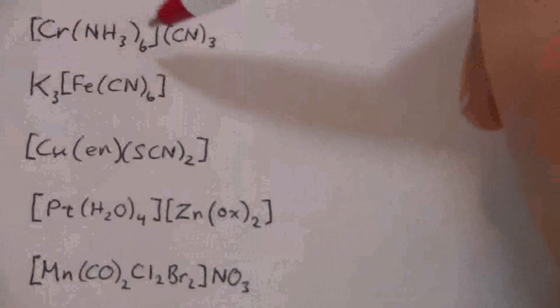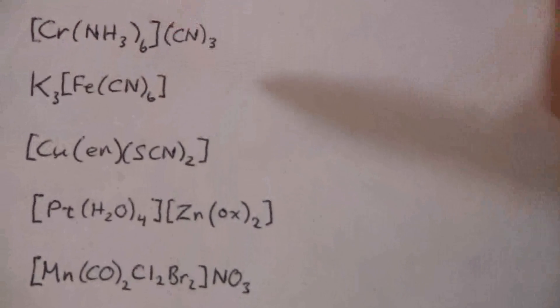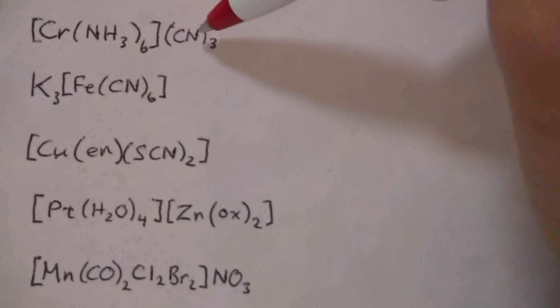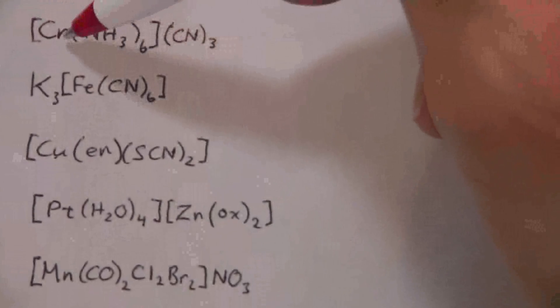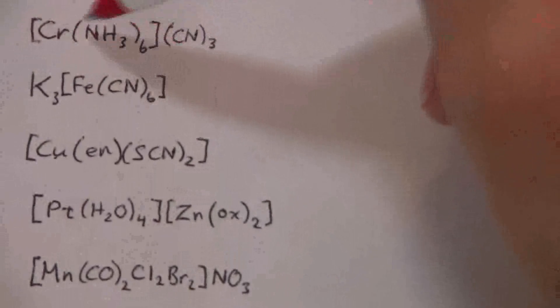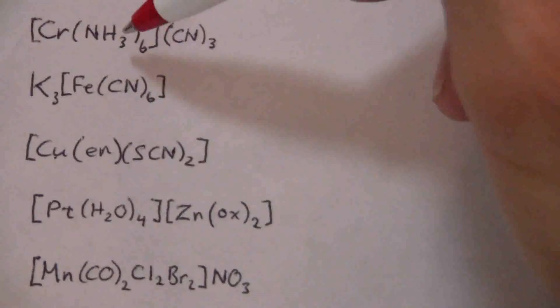Okay, so the cation must have what charge? Well, the cyanide is a negative 1, we have three of those, so that means this is negative 3, so the cation must be positive 3. So what's the charge of the metal? It's that positive 3 because the ammonia is 0.